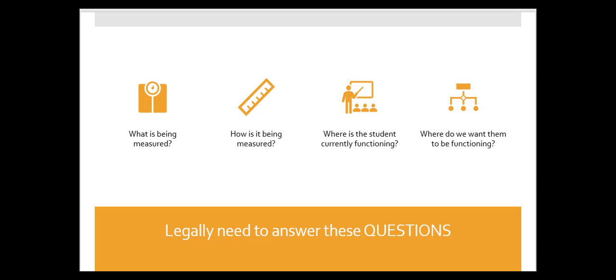This means that IEP goals need to list specific skills, explain how that skill will be measured, where the student is functioning upon the initial implementation of the goal, and where we expect the student's level of attainment to be 12 months out from that IEP date.